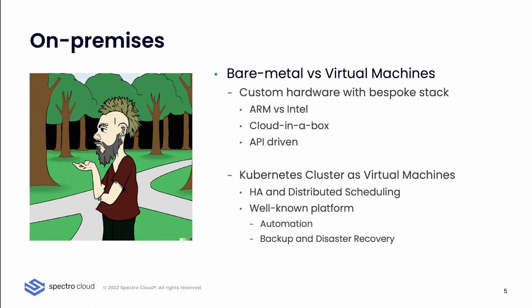If you want to run Kubernetes cluster nodes as virtual machines, there are definitely benefits such as high availability, distributed scheduling for your VMs within your hypervisor environment. Well-known platforms such as VMware, Microsoft Hyper-V, or Red Hat are valid options because they provide built-in automation, backup, and disaster recovery. If you use a bare metal solution, you may have to handle backup at a different layer and do storage replication at a different layer — which can get things more complicated. So it's an architectural choice, but please consider all those aspects as they will definitely have an impact on your final bill.